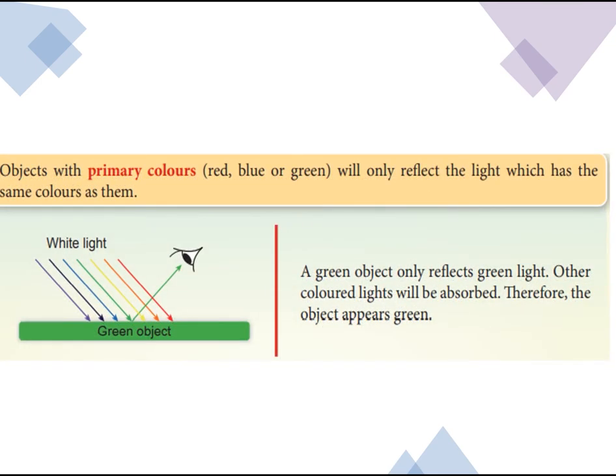Objects with primary colors — red, blue, or green — will only reflect the light which has the same color as them. For example, a green object only reflects green light. Other colored lights will be absorbed. Therefore, the object appears green.